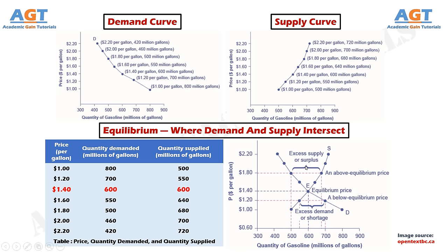This accumulation puts pressure on gasoline sellers. If a surplus remains unsold, those firms involved in making and selling gasoline are not receiving enough cash to pay their workers and cover their expenses. In this situation, some producers and sellers will want to cut prices, because it is better to sell at a lower price than not to sell at all. Once some sellers start cutting prices, others will follow to avoid losing sales. These price reductions in turn will stimulate a higher quantity demanded. So if the price is above the equilibrium level, incentives built into the structure of demand and supply will create pressures for the price to fall toward equilibrium.